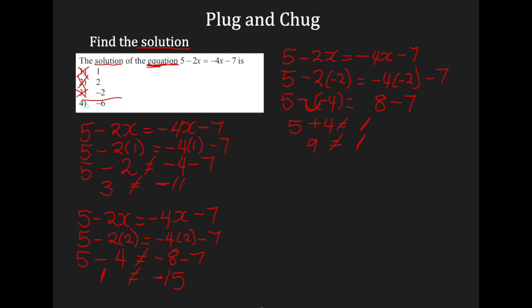Therefore, by default, my answer is negative 6. If you're on the Task test and you're using plug and chug and your answer is not 1, 2, or 3, by default it is 4. Bubble 4 on your Scantron and move on with your life.